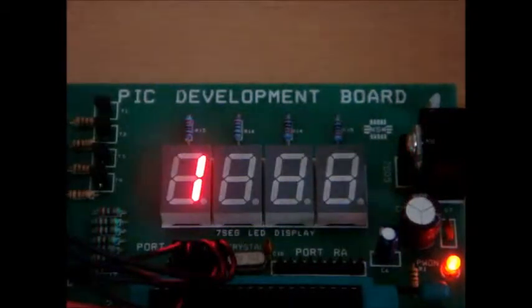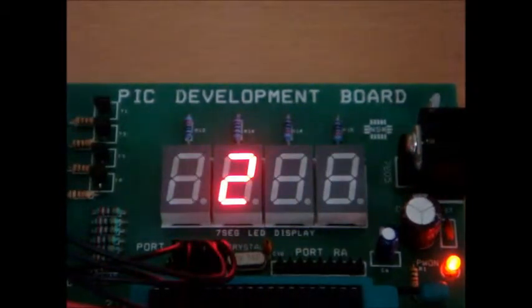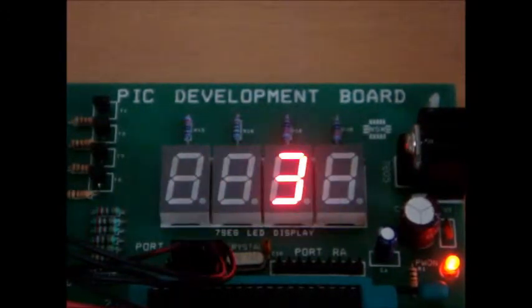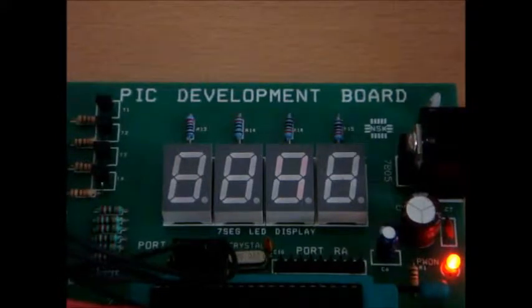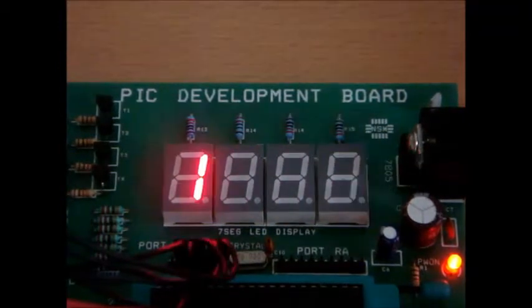Now I am going to decrease the delay and increase the speed in the consecutive seconds. Now you can see that I am recompiling the code with a lesser delay. So the 1, 2, 3, 4 is moving much faster than it was before.